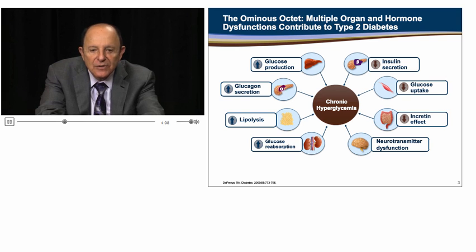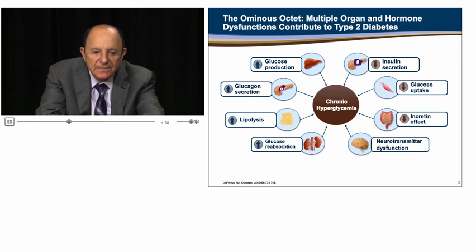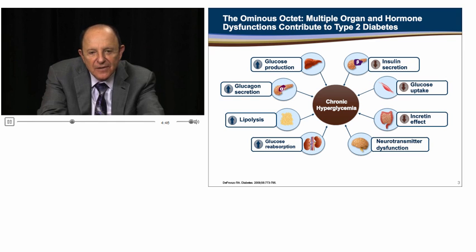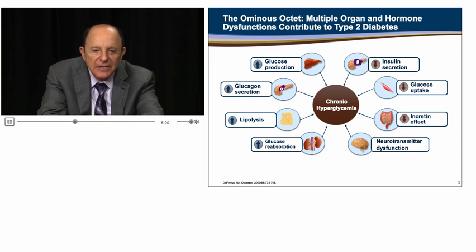Specifically looking at hormonal dysfunction, the progressive decline in pancreatic beta cell function leads to a decrease in insulin secretion. Alpha cell hypersecretion of glucagon results in elevated fasting plasma glucagon levels, leading to increased hepatic glucose production in patients with type 2 diabetes. Furthermore, type 2 diabetes leads to both deficiency in and resistance to the insulin stimulatory effects of incretin hormones produced in the gut. Insulin resistance in the liver results in overproduction of glucose despite elevation in fasting plasma insulin concentration. In the muscle, insulin resistance results in impaired glucose uptake following carbohydrate ingestion, leading to postprandial hyperglycemia.